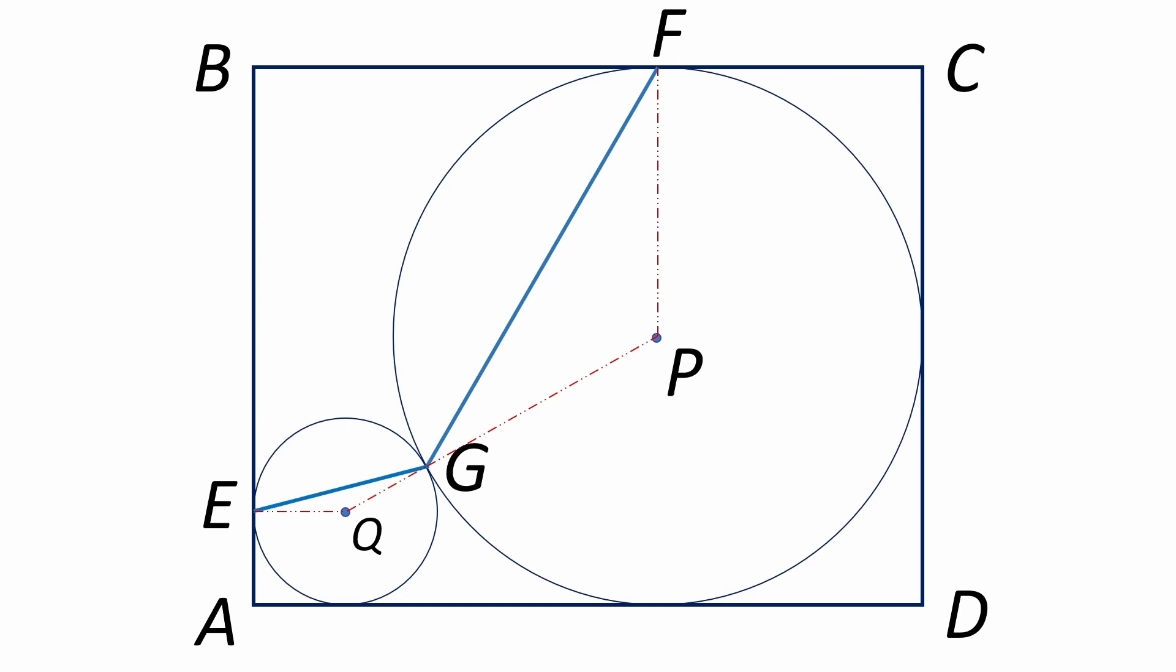Notice that we just created two isosceles triangles, EGQ and GFP. So the base angles of these two triangles are the same, and I'll label them as angle X and angle Y, respectively. Now let's give ourselves some space to do some work.